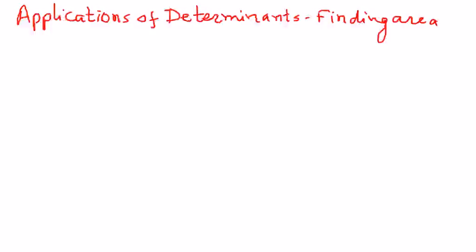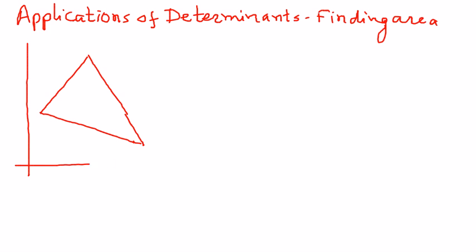The area of a triangle whose vertices are coordinate points - let's say we have a triangle, and these are in the x and y coordinates like that.